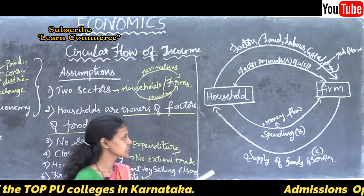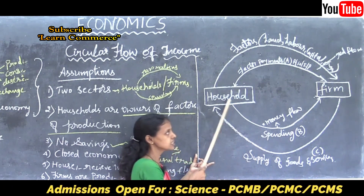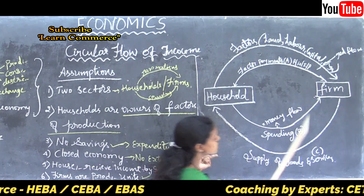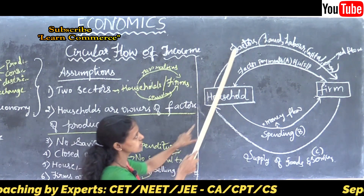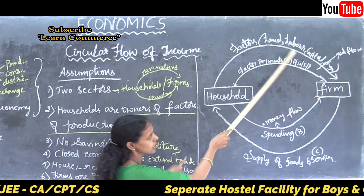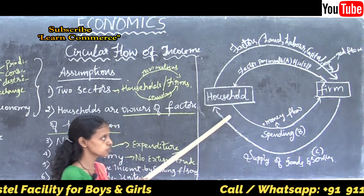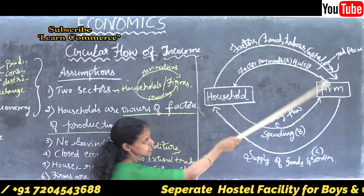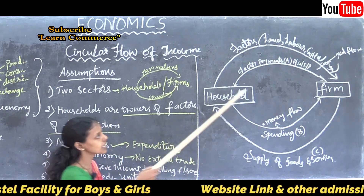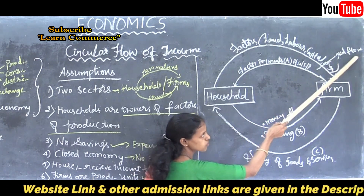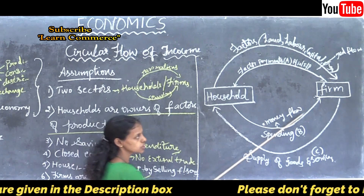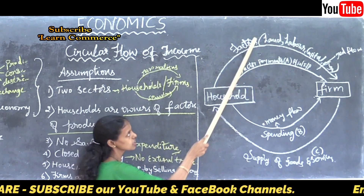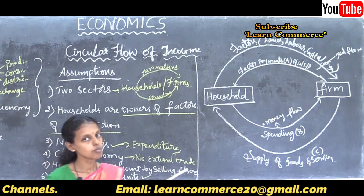Households make spending in the form of purchasing goods and services. Whatever money is received as factor payments is reinvested in purchasing goods and services. The outer circle represents the real flow of income — the real flow of factors — while the inner circle represents the money flow in a simple economy.